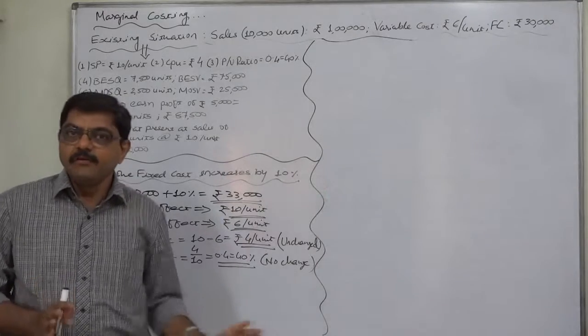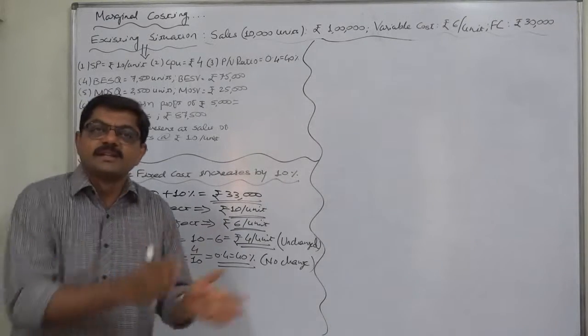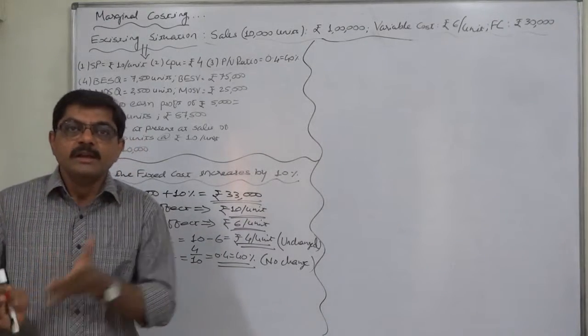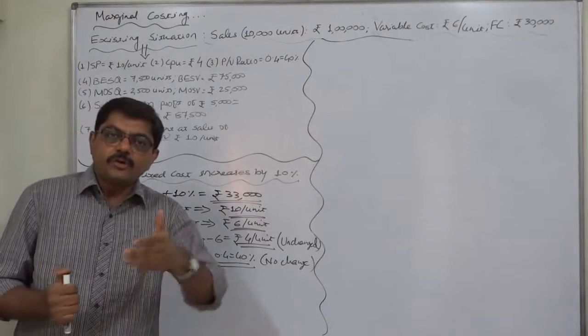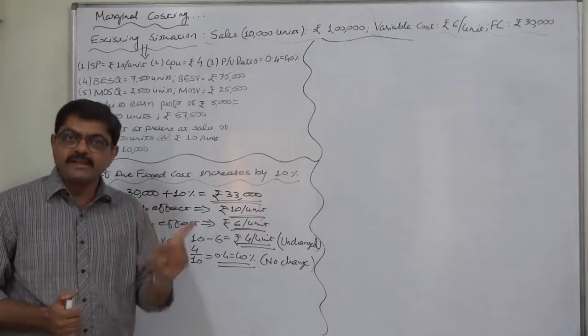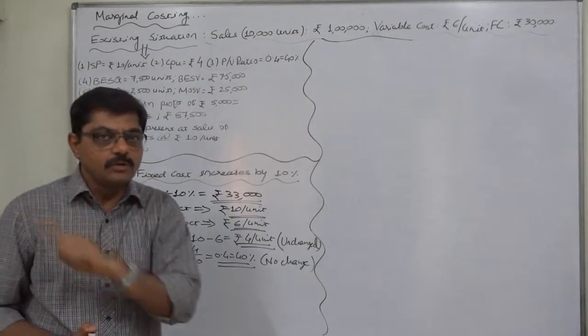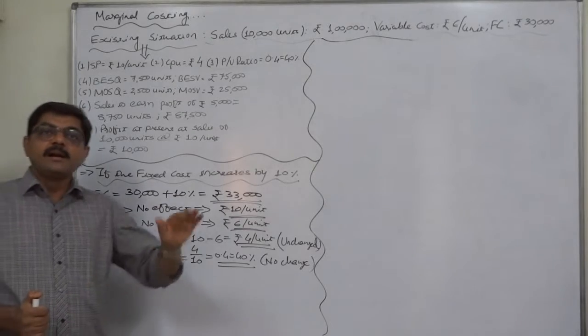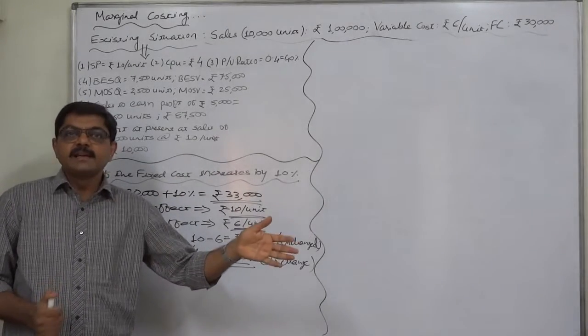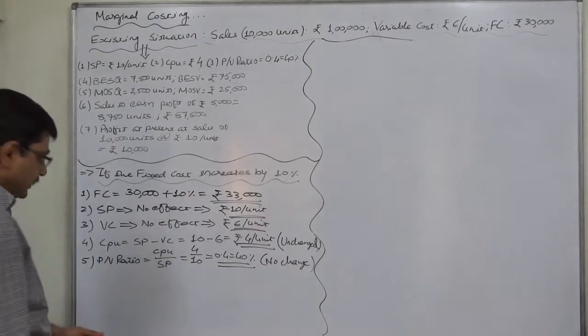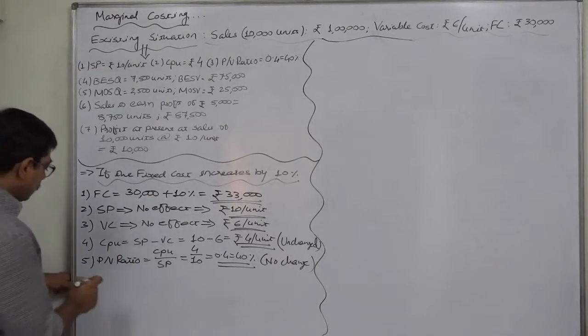Because ultimately what is profit? Contribution minus fixed cost. From contribution we write off or charge the fixed cost, the result is profit. So with change in fixed cost there will be no change in contribution, but our ultimate result of the selling activity, the profit, will change.